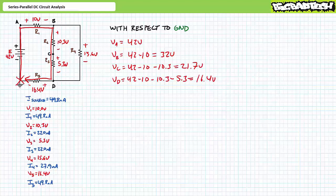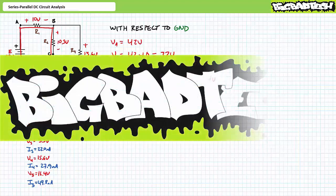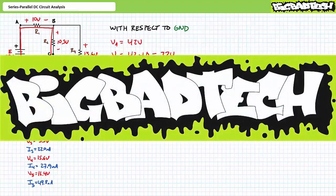That's about it for this set of illustrated example problems. As I mentioned earlier, everything from this point on is series-parallel circuit analysis. The only way to get good is plenty of practice — it won't be easy at first, but the more you struggle with these skills, the easier they'll become. In conclusion, this lecture reviewed basic series and basic parallel DC circuit properties and put them to use in several illustrated examples of series-parallel DC circuit analysis. Remember to review these concepts as often as you need to. Thank you very much for your attention and interest — we'll see you again during the next lecture of our series. Be sure to check out the Big Bad Tech channel for additional resources and updates.